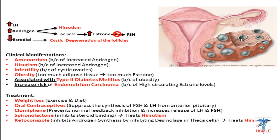How do we treat? The first line of treatment is weight loss — we can ask the patient to exercise and get on a good diet to lose adipose tissue. We can also use oral contraceptives, which suppress the synthesis of FSH and LH from the anterior pituitary; our target here is LH. We can also use clomiphene, which prevents normal feedback inhibition and increases the release of LH and FSH — targeting increased FSH release and preventing the negative feedback caused by estrone.